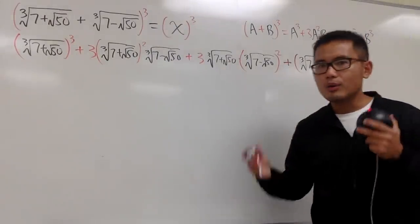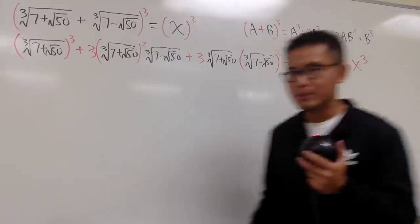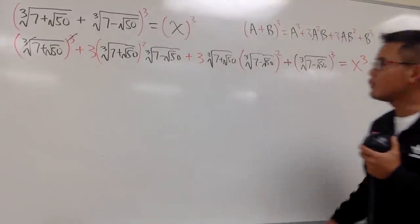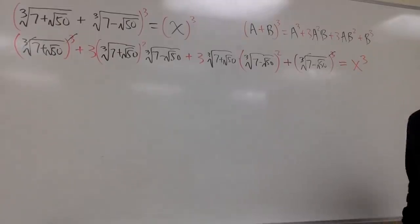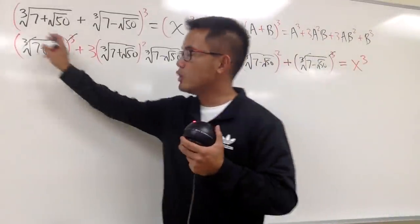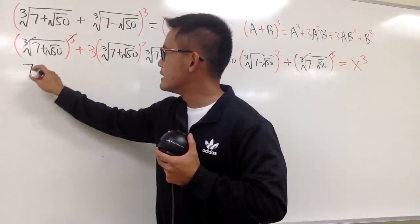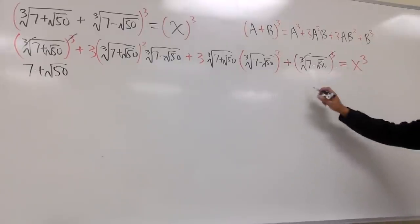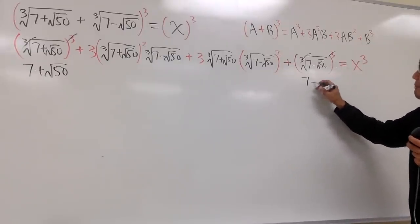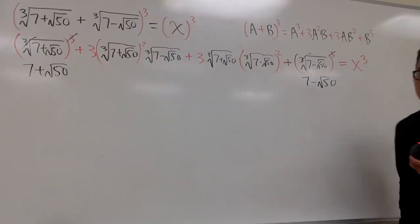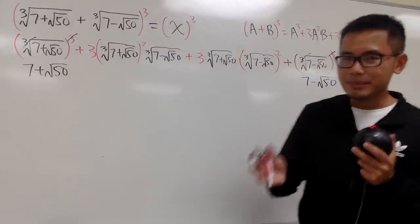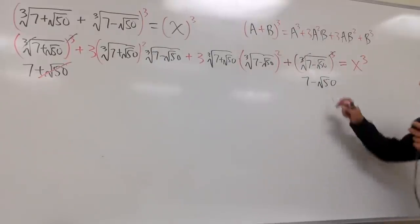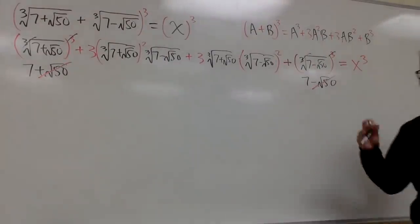The beauty of this is that the first and last terms cancel nicely. The first term — cube root of (7 + √50) cubed — becomes just 7 + √50, and the last term becomes just 7 − √50. So positive √50 can be canceled with negative √50, and that's wonderful.